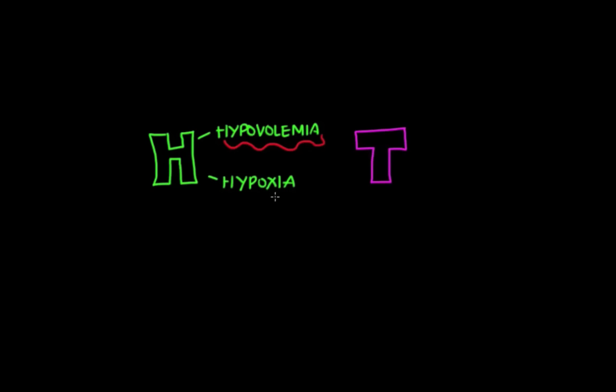The next H is hydrogen ions. And hydrogen ions basically means acidosis, meaning that the body's pH is too low. And acidosis often results from long periods of hypoxia.